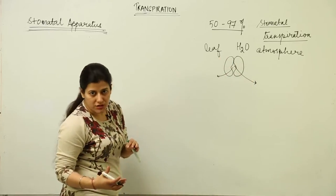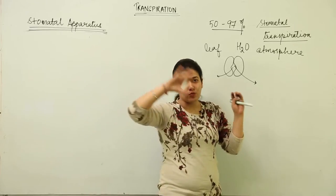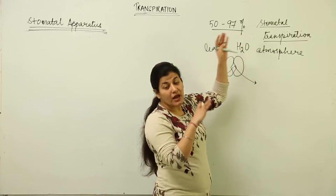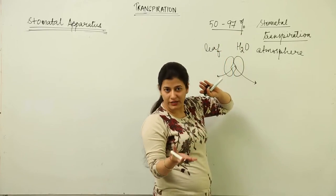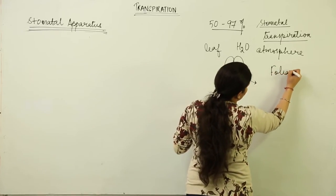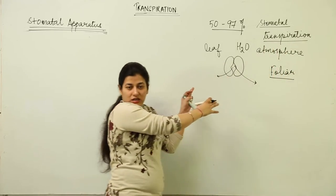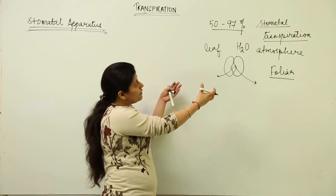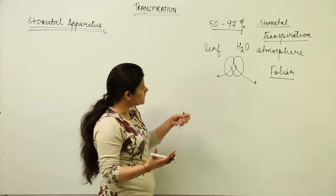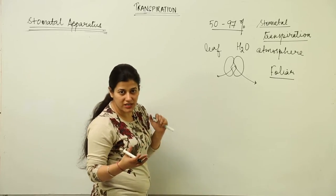This exchange takes place through the stomatal pores, which is why we discuss the stomatal apparatus. As much as 97 percent of water vapors are lost through foliar transpiration — transpiration that takes place through the leaves. Stomatal transpiration is the main role player in the process of transpiration inside plants with abundant foliage.